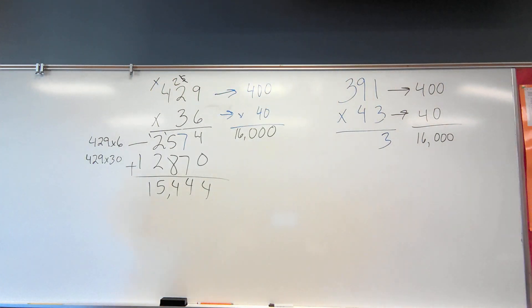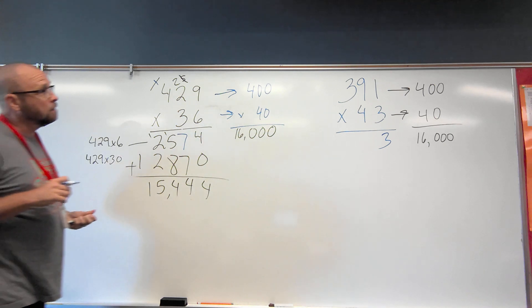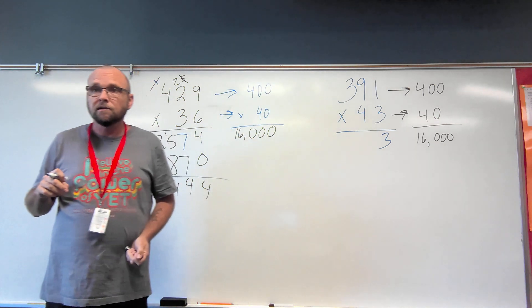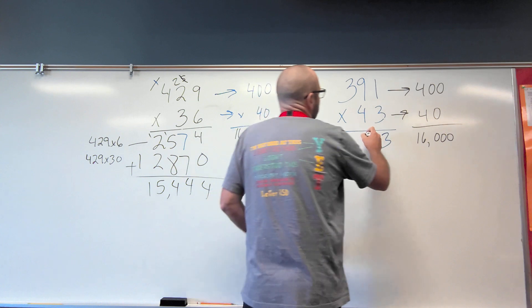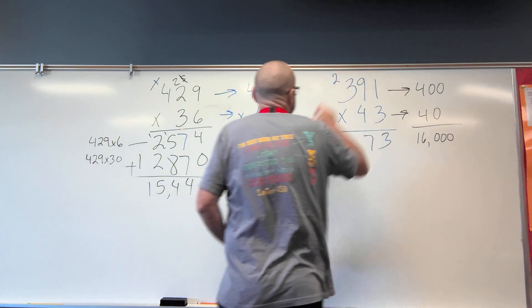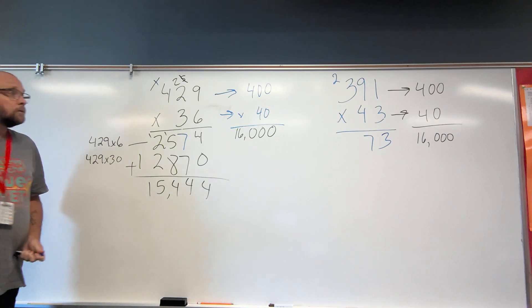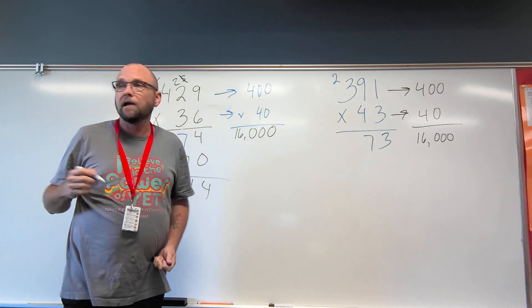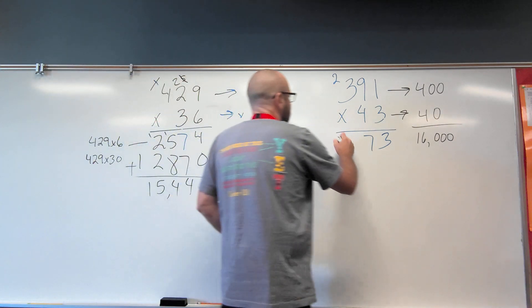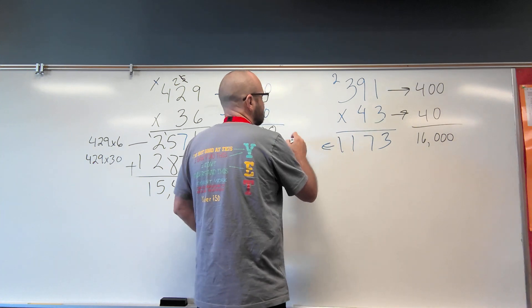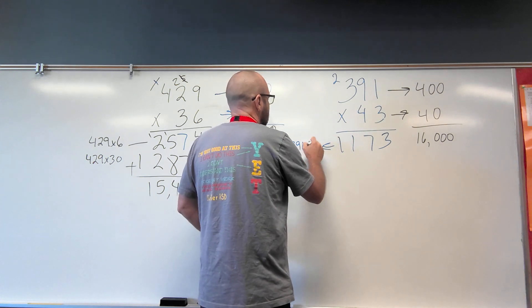Three ones times nine tens is? Twenty-seven. Or seven tens and two hundreds. Three times three is? Nine. Nine plus two more? Eleven. So this right here was 391 times three.